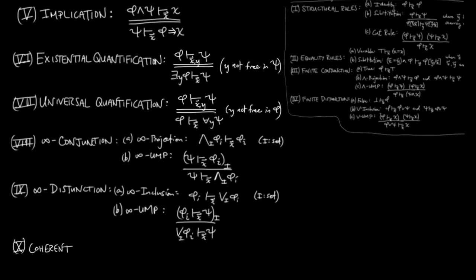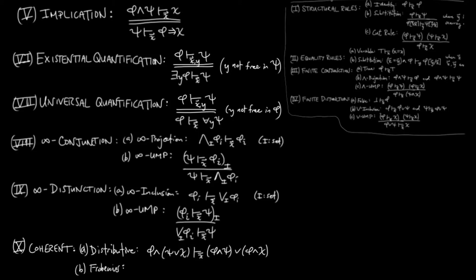Tenth, coherent axioms. We have the distributive axiom: 'phi and (psi or chi) entails (phi and psi) or (phi and chi) in the context of x.' We also have the Frobenius axiom: 'phi and there exists y, psi entails there exists y, phi and psi in the context of x,' where y does not occur in x. These coherent axioms are required when working in a fragment of logic weaker than first-order, because in full first-order logic these two conditions can be proven.